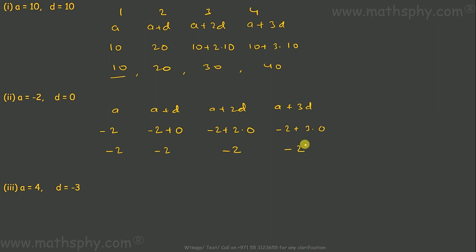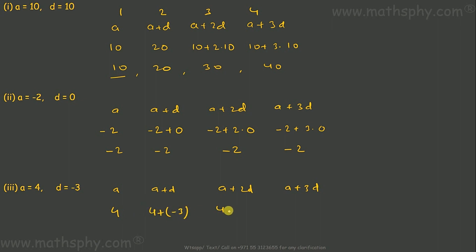All terms would be the same since the common difference is 0. This one: A, A plus D, A plus 2D, A plus 3D. First term is A, so A is 4. Second term would be 4 plus negative 3 equals 1. Third term: 4 plus 2 into negative 3, which is negative 2. Fourth term: 4 plus 3 into negative 3.